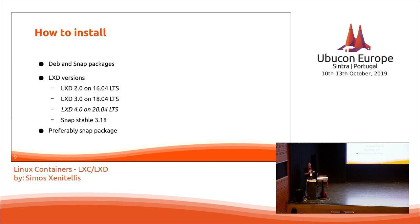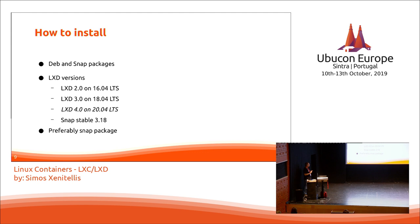Apart from Debian packages, there is also a snap package. Through the snap package you can install all of these versions, and if you use the stable channel, you get the very latest version, which is currently 3.18. The snap package is preferable because if you stick to the Debian package, the latest you get is 3.0 in Ubuntu 18.04. There is an effort to switch to snap packages, and it works just fine.